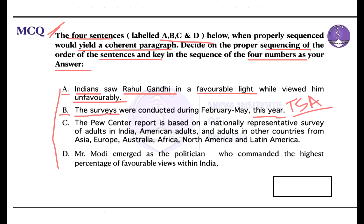The third one states: 'The Pew Center report is based on a nationally representative survey of adults in India, American adults, and adults in other countries from Asia, Europe, Australia, Africa, North America, and Latin America.' This could be considered as a report given by the Pew Center based on a survey of adults in India.